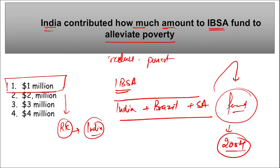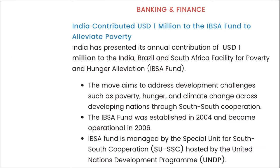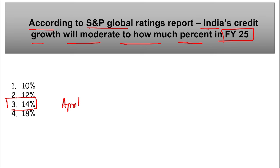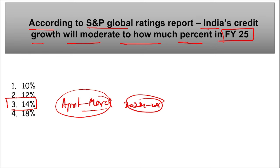According to an S&P Global Ratings report, India's credit growth is expected to moderate to 14 percent in Financial Year 25 (April 2024 to March 2025), down from the existing 16 percent growth in the first three quarters of Fiscal Year 24. This is due to tightening funding conditions, as rising interest rates globally — the US Fed has raised rates to close to 5 percent — are making lending more difficult.